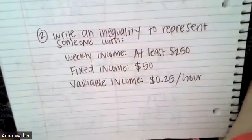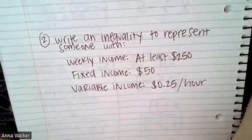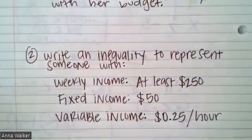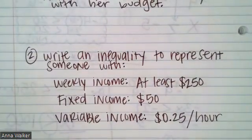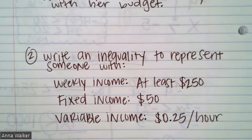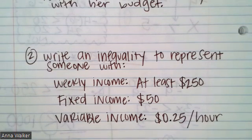Here is the second problem. This is kind of like the first one with the income. Write an inequality to represent someone with a weekly income of at least $250, a fixed income of $50, and a variable income of 25 cents per hour. You're thinking about the number of hours someone may have to work. Go ahead and pause and write this down if you need it. You can always check your answers in the table of contents and ask your teachers any questions. Hope you all have a good day. Bye!